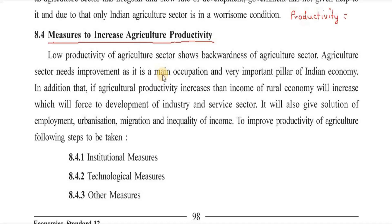Welcome back friends. Now let us see the measures to increase agricultural productivity. Let us define productivity again. Productivity means production per hectare of land — how much energy or production of the food crop per one hectare is called productivity.